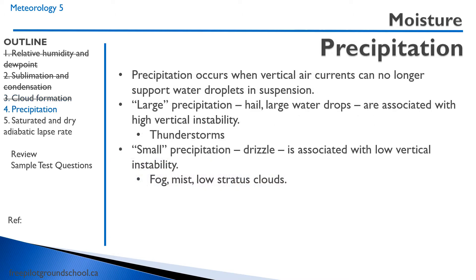Precipitation occurs when vertical air currents can no longer support water droplets in suspension. Sometimes the precipitation is large — large hail, large water drops. When it starts pouring down hard, that's associated with high vertical instability such as thunderstorms. The water droplets form, and then air currents push them back up where they coalesce with more water droplets, getting larger and larger until they're so heavy that the vertical updrafts can no longer sustain them. That's how we end up with very large hail.